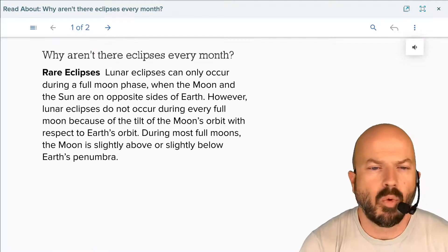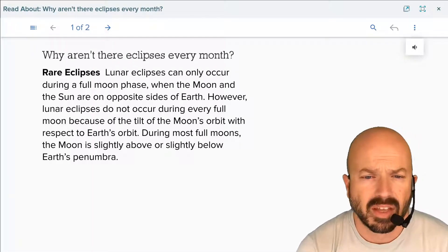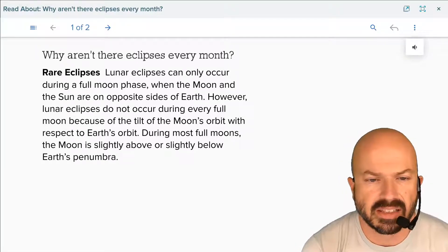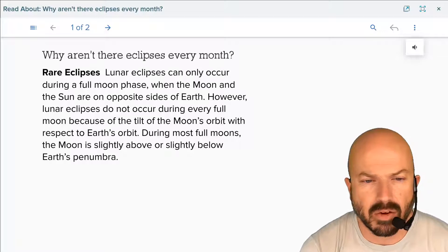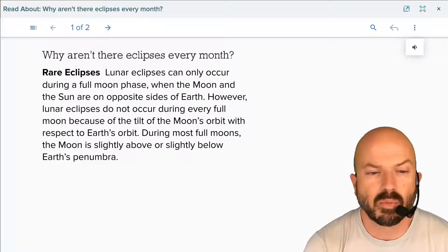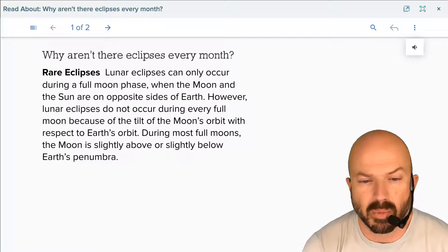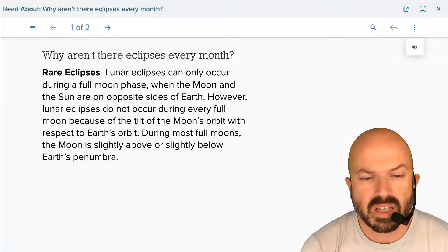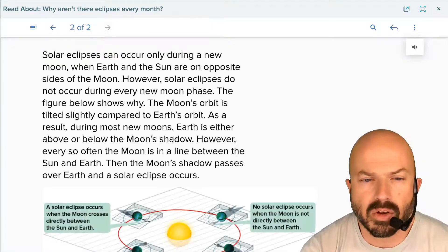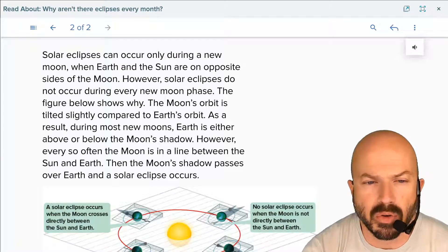Why aren't there eclipses every month? Lunar eclipses can only occur during a full moon phase, when the moon and the sun are on opposite sides of the earth. However, lunar eclipses do not occur during every full moon because of the tilt of the moon's orbit with respect to earth's orbit. During most full moons, the moon is slightly above or slightly below earth's penumbra.